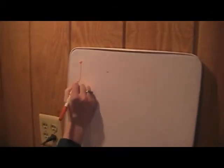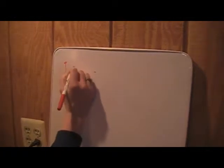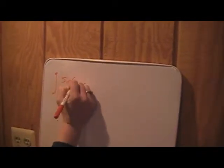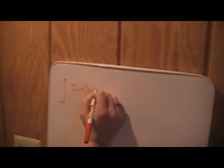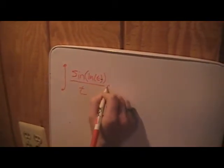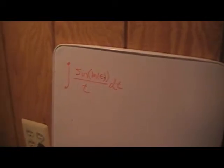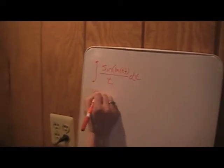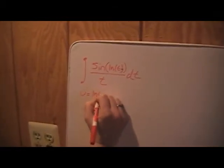We're going to integrate the sine of the natural log of t all over t with respect to t. So for this we're going to do u substitution.